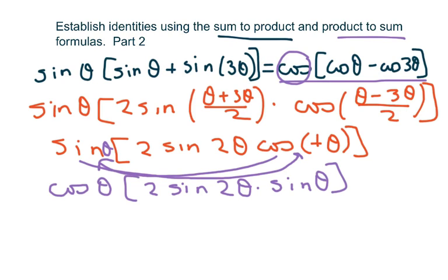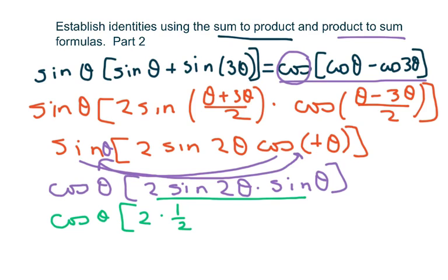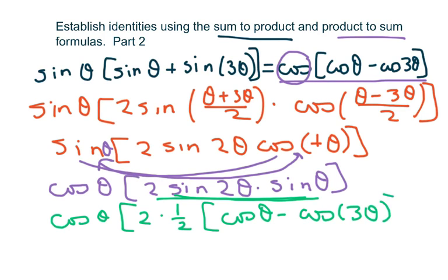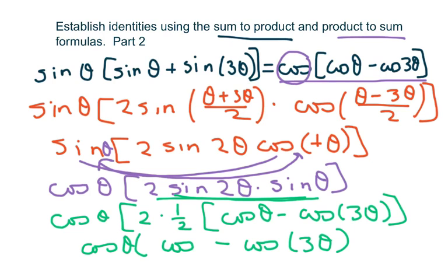Now I'm going to use my product to sum on this inner part. I'm going to get cosine times 2 times one half, dealing with the inner part, giving cosine of theta minus cosine of 3 theta. That all equals cosine of theta times (cosine theta minus cosine of 3 theta).